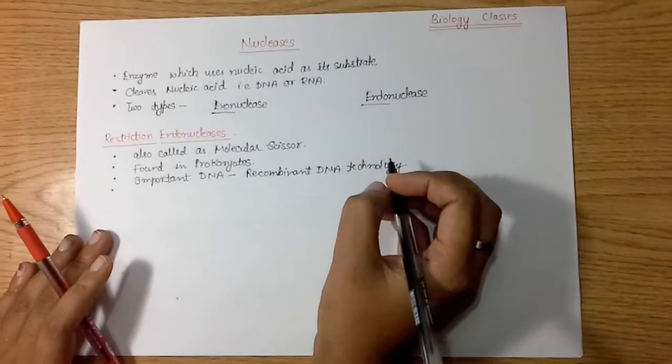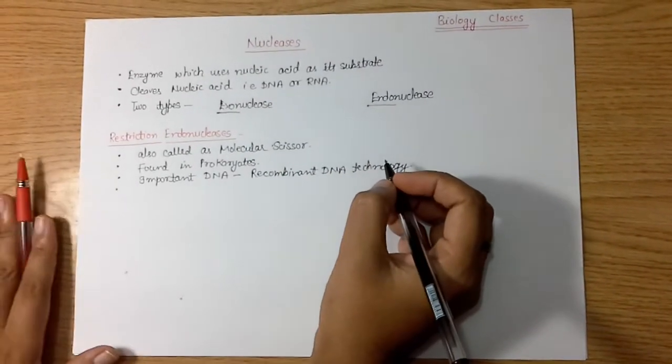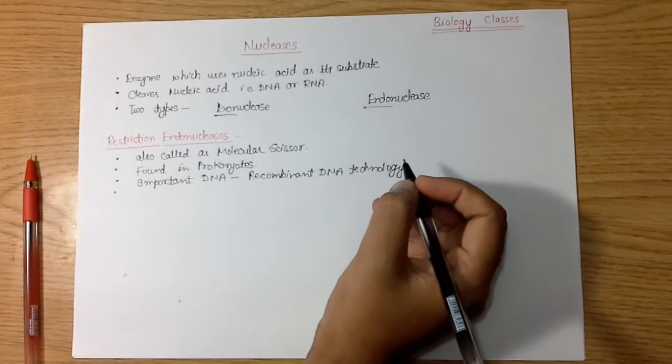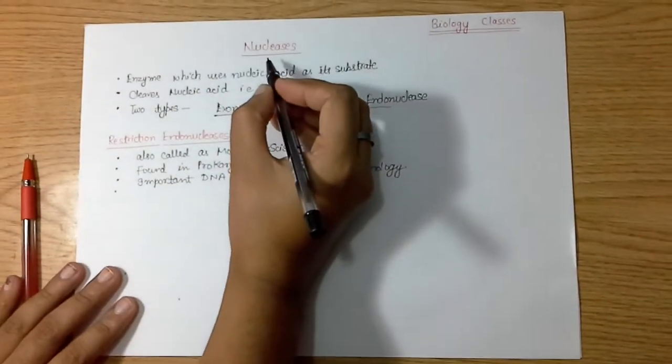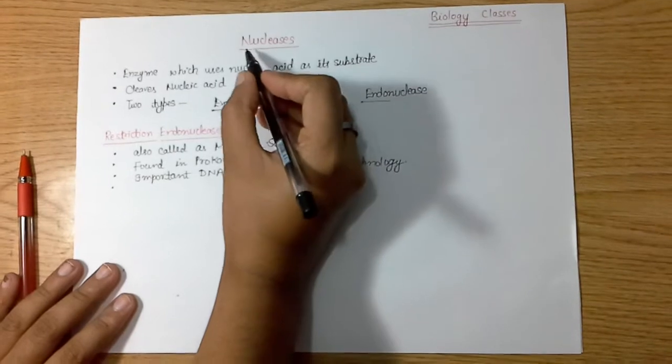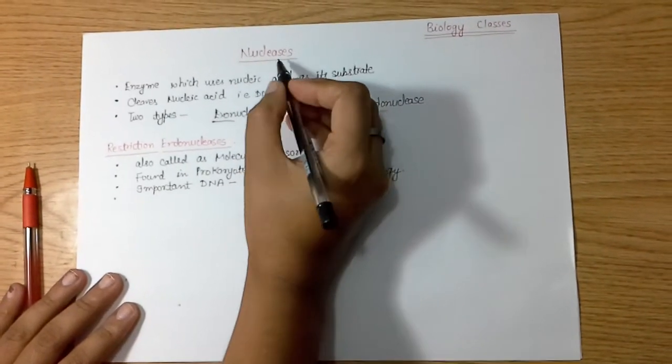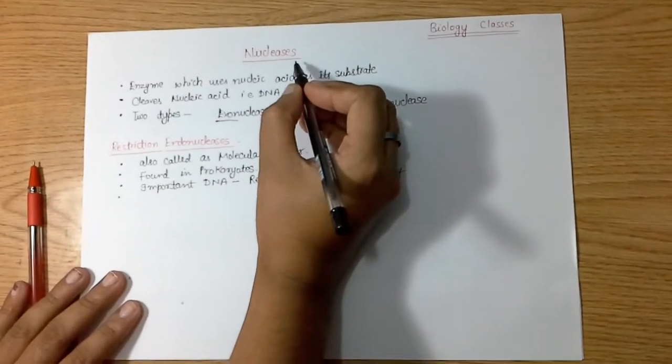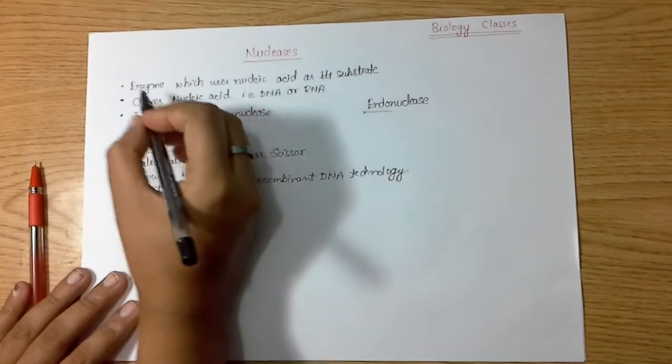Hello everyone, today in biology class we have a topic named nucleases. The term nucleases is made up of two words: nucleate and the suffix -ase. The suffix -ase indicates enzymatic nature, so nucleases is a group of enzymes which use nucleic acid as their substrate.